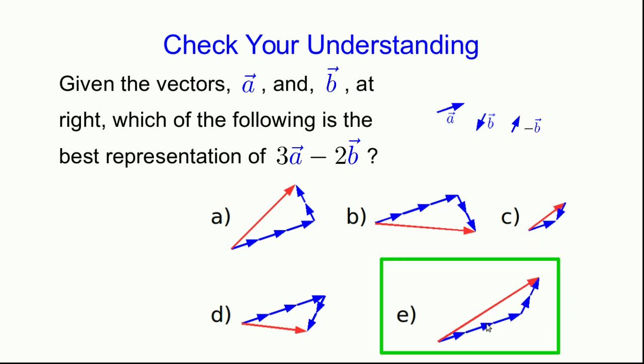And so if you look here's 1a, 2a, 3a and then minus 1b, minus 2b, and we started here and we end here so we draw the result this way. And so e is correct.